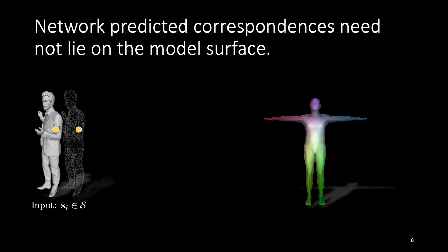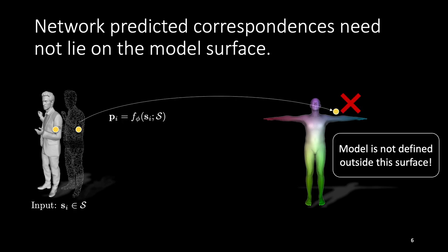But we have a slight problem. It is difficult to ensure that the network predicted correspondences lie on the surface of the model because outside the surface the model function is not even defined. This breaks our loop.